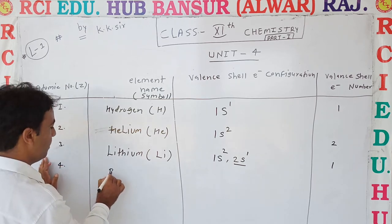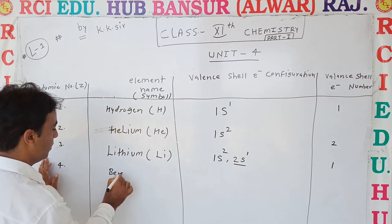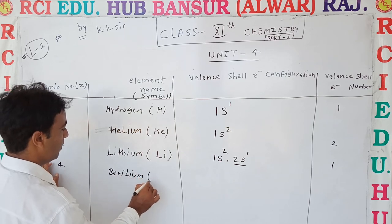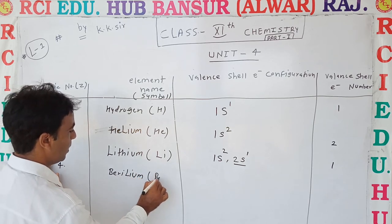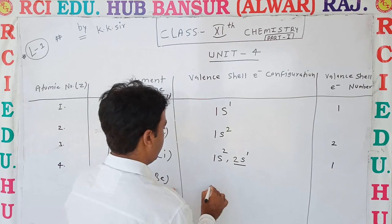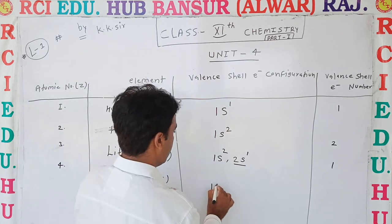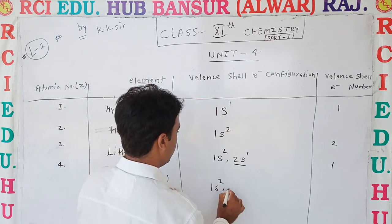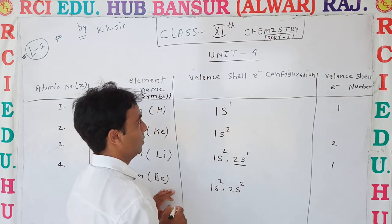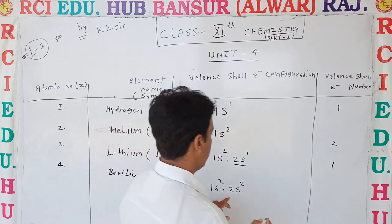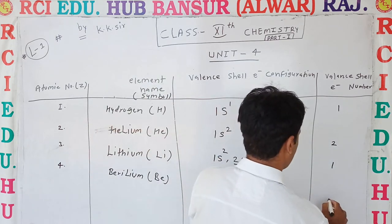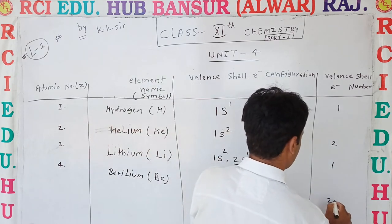Atomic number 4 is Beryllium, symbol Be. Its valence cell electronic configuration is 2s2, and the valence cell electron number is also 2.